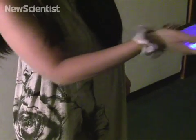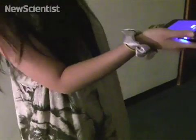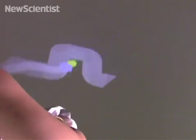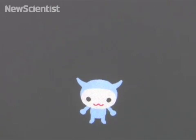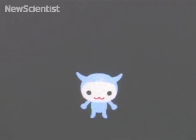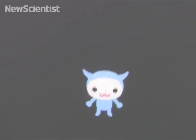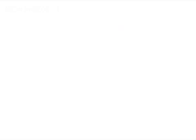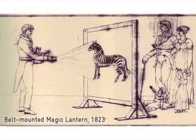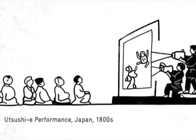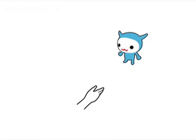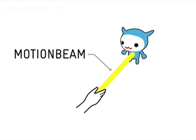Our research is concerned with how the movement of a handheld projector can be used to control projected characters and merge them seamlessly into the physical environment. Character interaction is applicable in a range of application domains, such as games, educational software, virtual worlds, and storytelling. We draw from the tradition of pre-cinema handheld projectors that use direct physical manipulation to control projected imagery, and have developed a metaphor for character interaction with handheld projectors labeled motion beam.